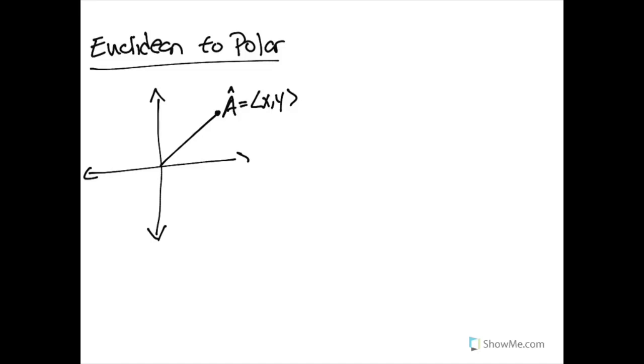If we want to turn this into a polar coordinate system, we need to find out the length of this vector and then the angle of this vector relative to the origin axis.